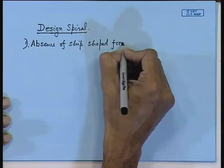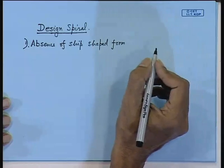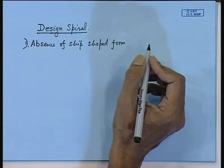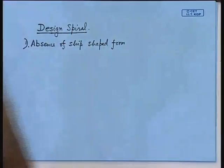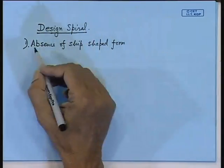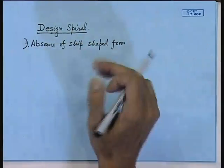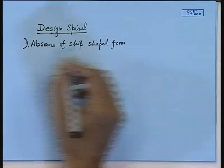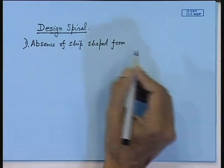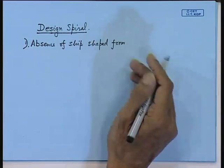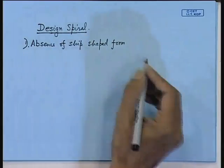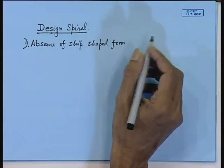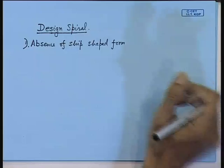Ships are normally symmetric about the centerline. Here, that centerline concept is not there. Instead of the ship-shaped form, the geometry is more truss-shaped — it is conical and similar shapes.